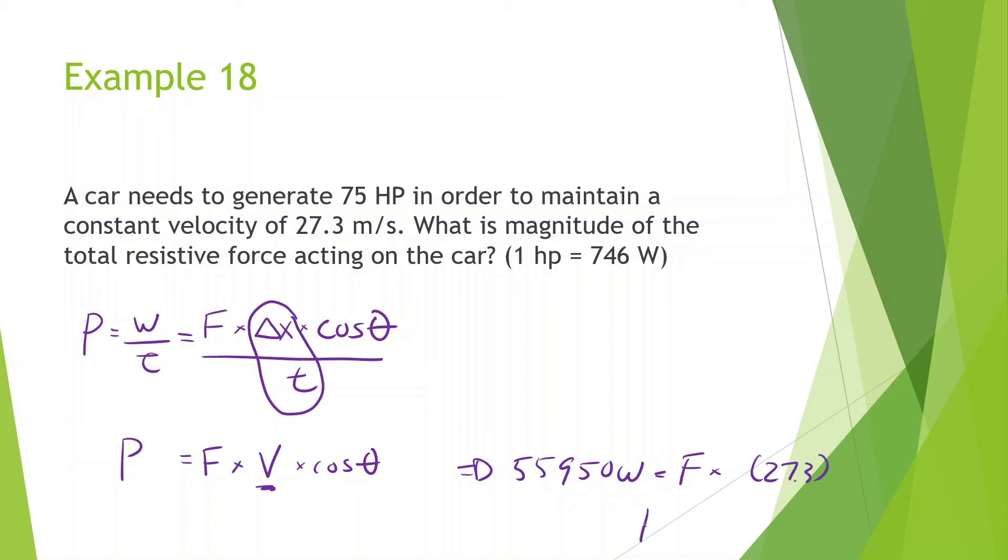You're going to use this formula many times when something is moving with a constant velocity. So that's a key indication of using this formula force times velocity. We're going to divide it by 27.3, and what we have is 2049 newtons.